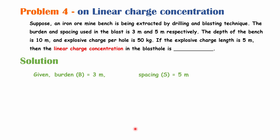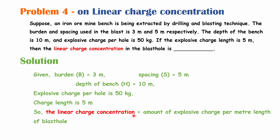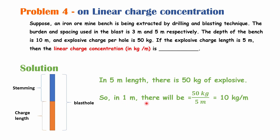Given: burden = 3 m, spacing = 5 m, depth = 10 m, explosive charge per hole = 50 kg, charge length = 5 m. The linear charge concentration is the amount of explosive charge per meter length of blast hole. In the charge length of 5 meters, we have 50 kg of explosives. So in 1 meter, there will be 50 ÷ 5 = 10 kg per meter. Therefore, the linear charge concentration for this blast hole is 10 kg per meter.